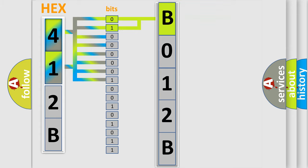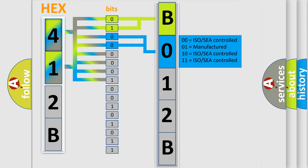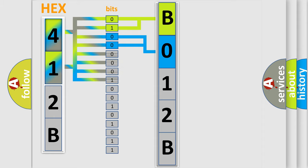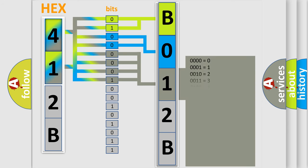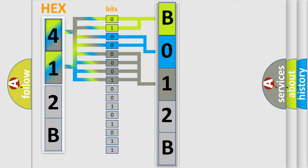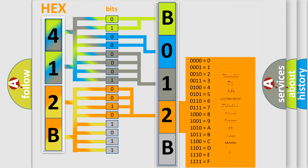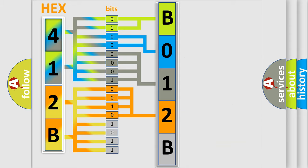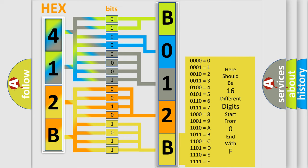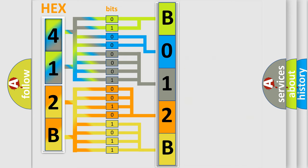The next two bits determine the second character. The last bits of the first byte define the third character of the code. The second byte is composed of a combination of eight bits. The first four bits determine the fourth character, and the combination of the last four bits defines the fifth character. A single byte conceals 256 possible combinations.